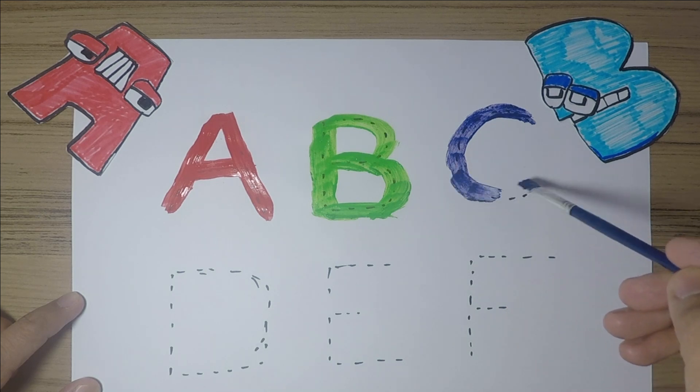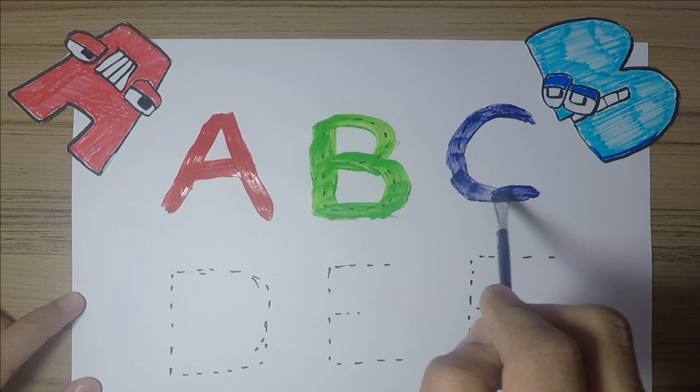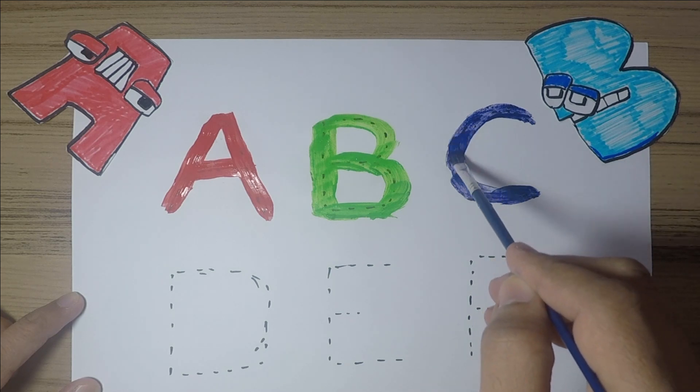Let's use the color orange to paint alphabet D. You know D stands for dog and dice.